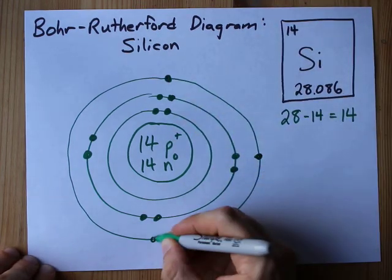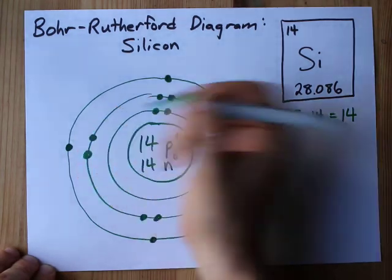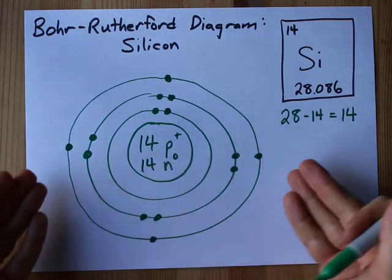One, two, three, four valence electrons in that outer shell, and I'm done.